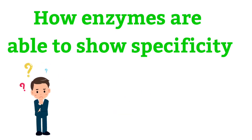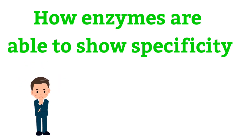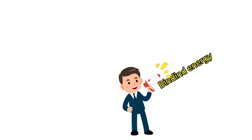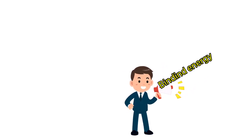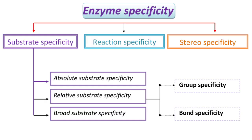Specificity is one of the important properties of enzymes, like catalysis. There should be some factor responsible for this property, and that factor is binding energy. Enzymes are able to show specificity because of this binding energy. Enzyme specificity is mainly classified into three types: substrate specificity, reaction specificity, and stereospecificity.